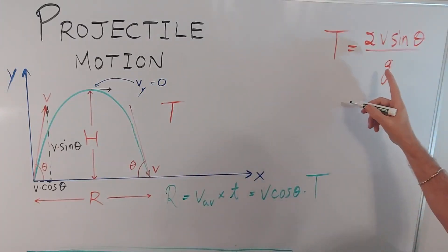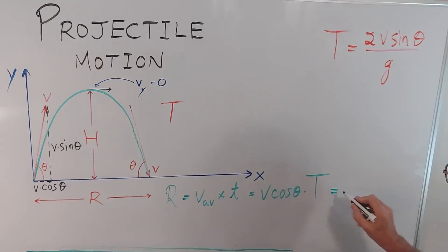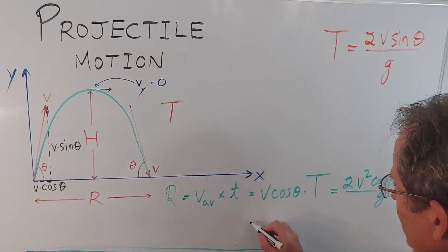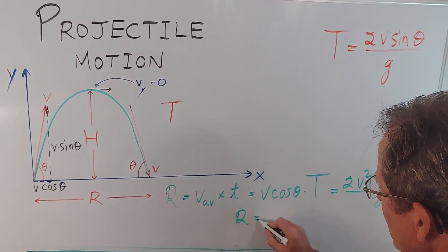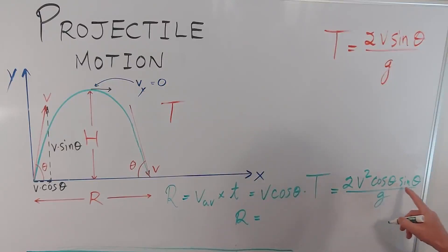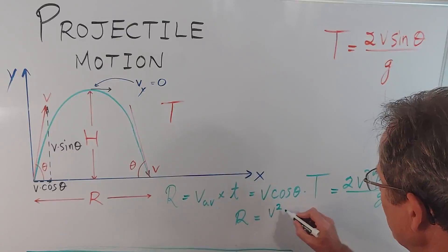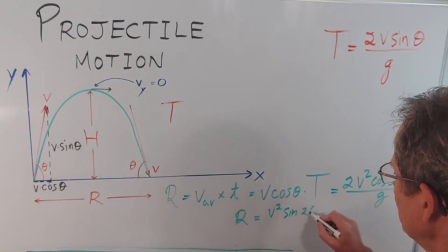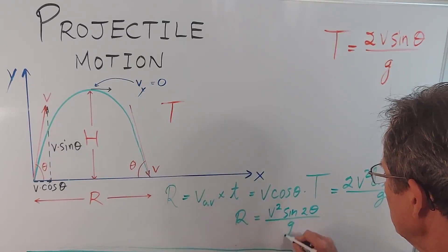So if I substitute this into here I'm going to get 2 then v times v so v² times the cos θ and the sine of θ all divided by g. However you might know the trig identity that says that 2 times cos θ times sine θ is the sine of 2θ. So I can simplify that to v² times the sine of 2θ divided by g.